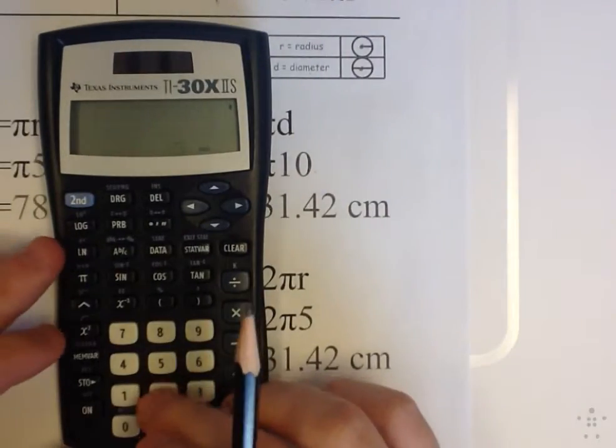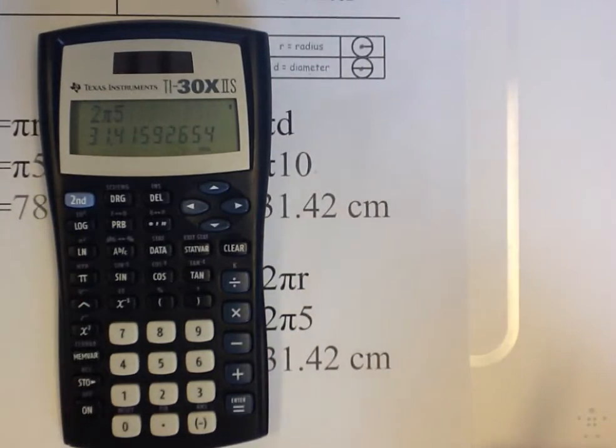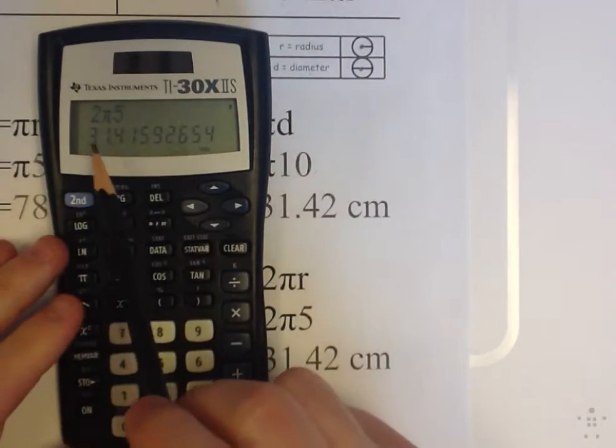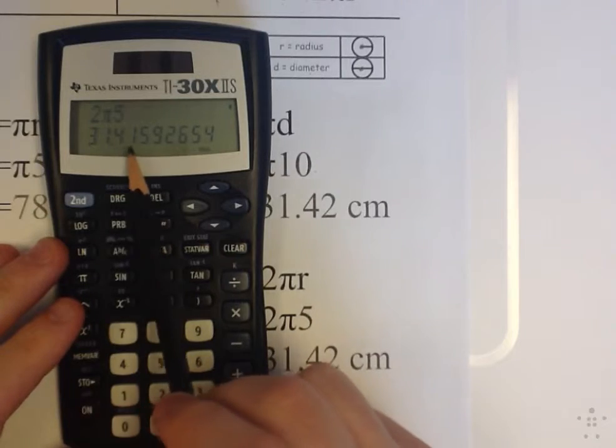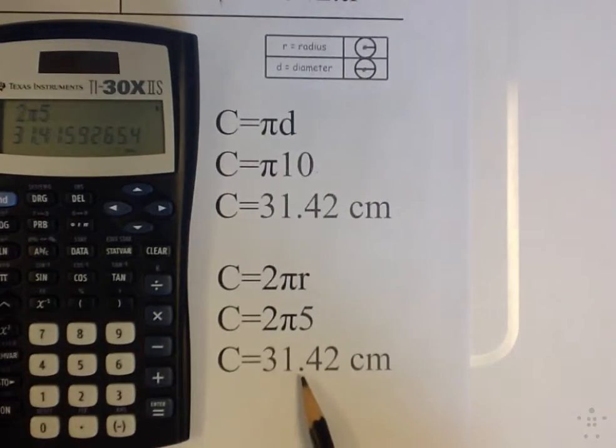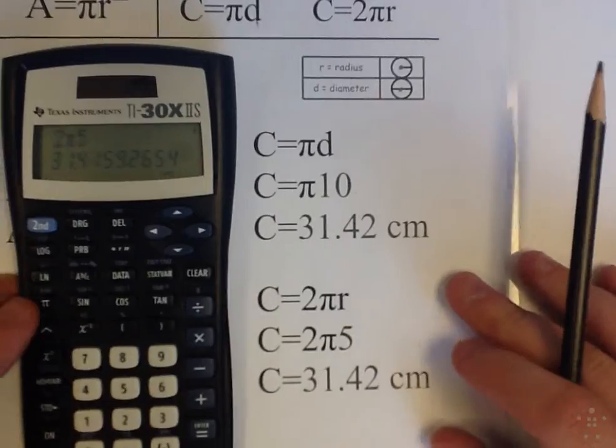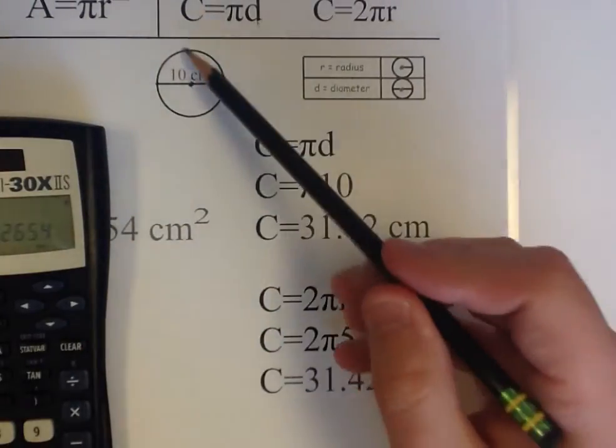Then I simply do that on the calculator. 2 pi 5 equals, and I get the same exact answer, 31.415. My 5 tells me to round my 1 up to a 2, 31.42 centimeters. So you can see that both formulas gave me the same circumference.